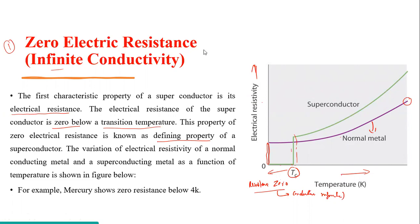When we talk about a superconductor, it is a material whose resistance, as temperature decreases, suddenly drops to zero at a particular temperature, and its conductivity becomes infinite. One of the best examples is mercury. Mercury shows superconducting behavior at 4 Kelvin — the critical temperature Tc for mercury is 4 Kelvin. When mercury is brought to 4 Kelvin, its resistance becomes zero. This is the first property of a superconducting material.